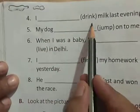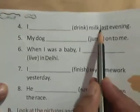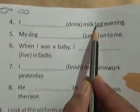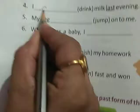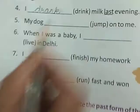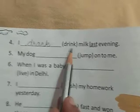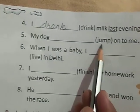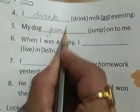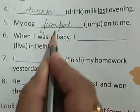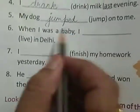I drank milk last evening. Again 'last' is here, so the sentence is in past form. Some words show us their past by changing their form — 'drink' changes to 'drank.' I drank milk last evening — the past form of 'drink' is 'drank.' My dog jumped on to me — 'jump' is an action word, and the past of 'jump' is 'jumped.' My dog jumped. The sentence is in past form.